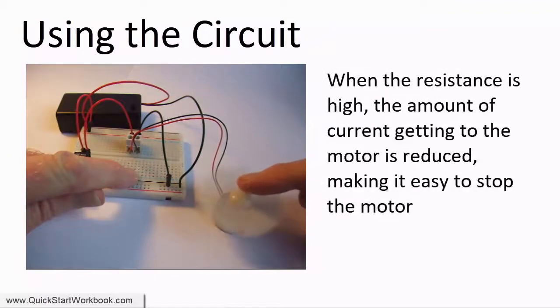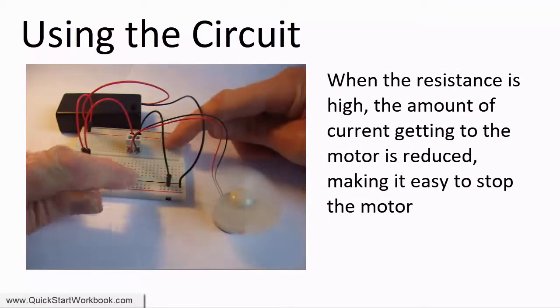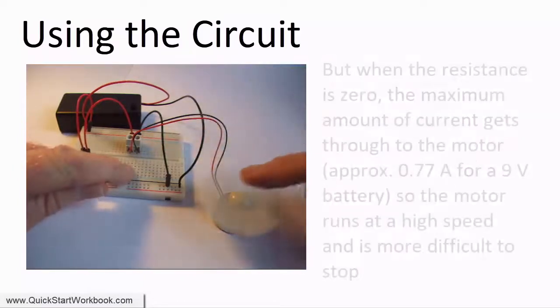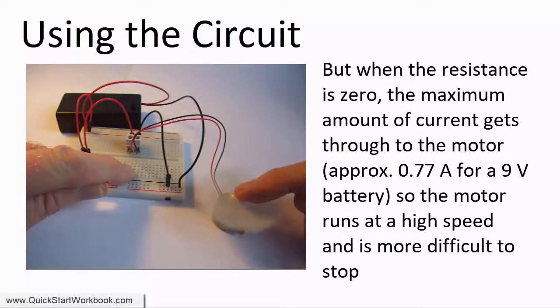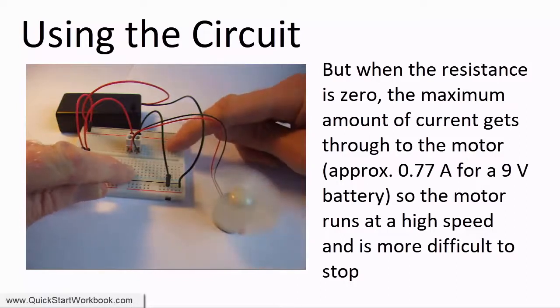When the motor is running on a high resistance low current setting, it's very easy to stop the motor because it's running on reduced power. However, if I run it on a low resistance high current setting, the power is high and it is more difficult to slow the motor down.